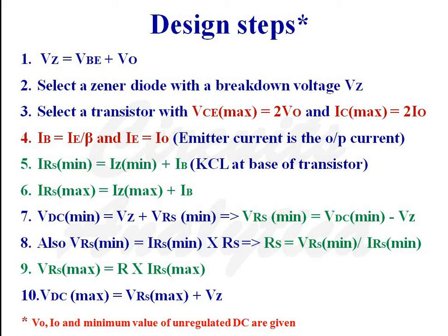Design steps: the specifications are output voltage, output current, and minimum value of unregulated DC voltage. VZ = VBE + V0. Select a zener diode with breakdown voltage VZ. Select a transistor with VCE(max) = 2 × V0 and maximum collector current equal to 2 × I0.